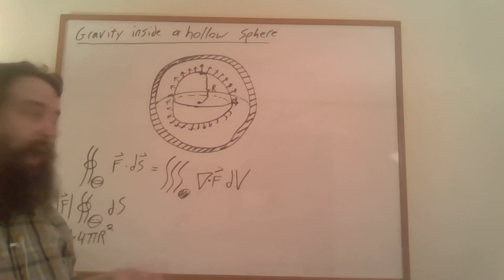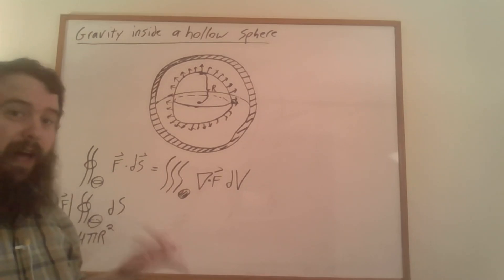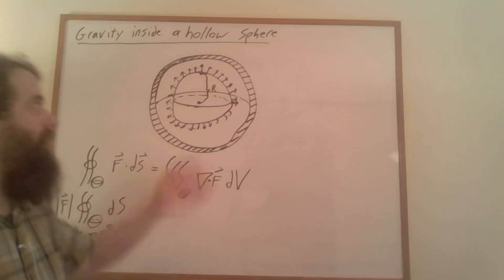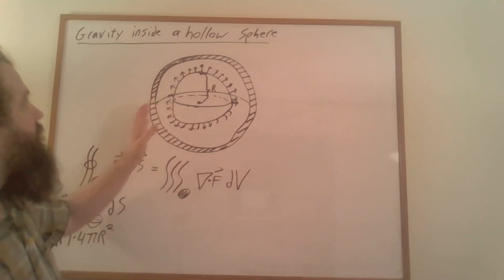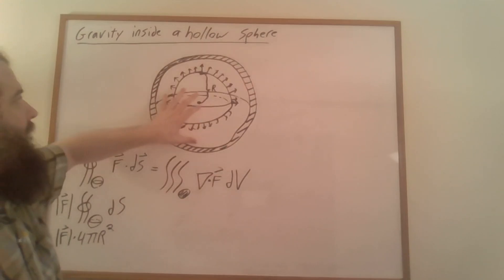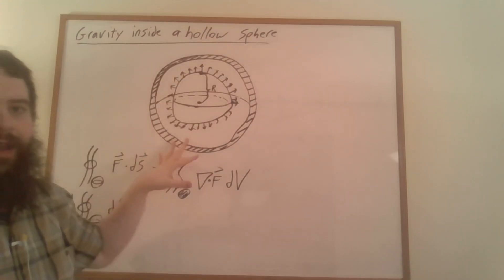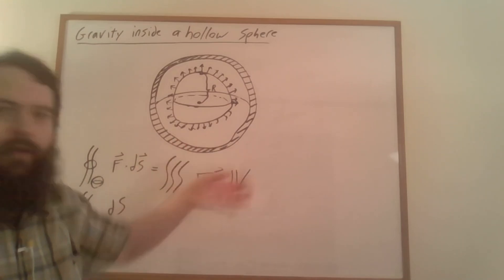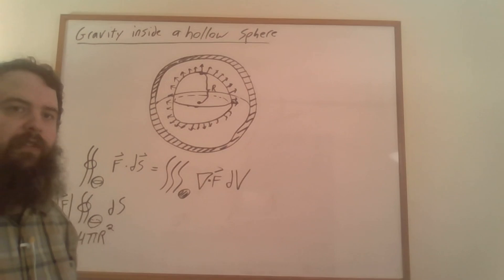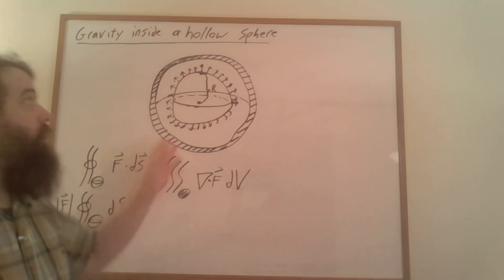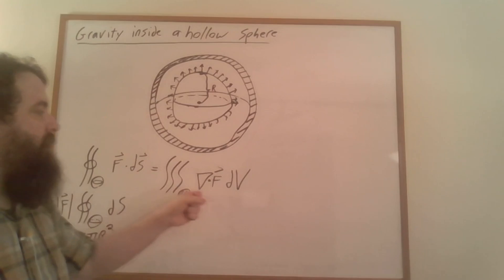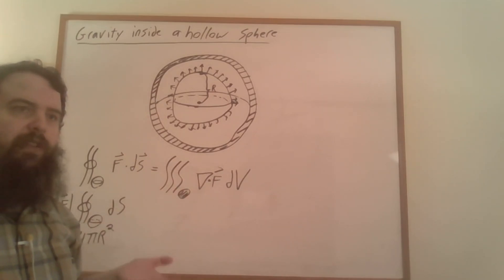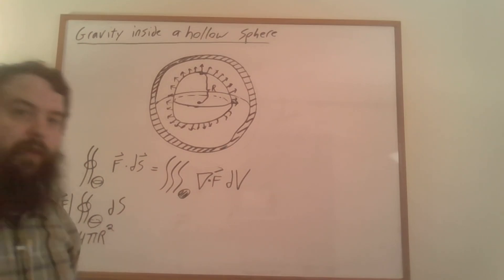Now it might look like we've gotten ourselves into a lot more work. We would have to calculate the gravitational field at every point in order to get the divergence. But here's the clever thing: when we're looking at a gravitational field, its divergence at any point is going to just be a reflection of the mass density. Let me show you what I mean by calculating the divergence of the gravitational field of just a single point.